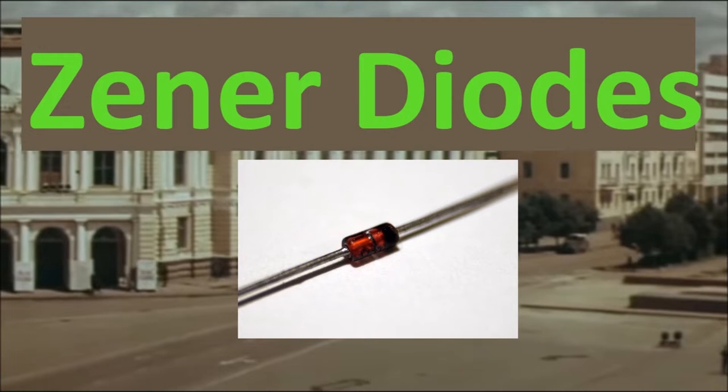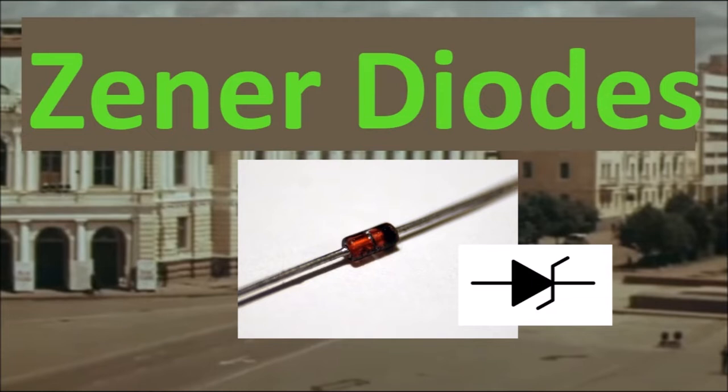A Zener diode is very similar to a conventional diode. A Zener diode has a PN junction. Both conventional and Zener diodes behave much the same when forward biased. However, what makes a Zener diode unique is its application when reverse biased. A Zener diode is designed to allow current to flow backwards when a specific reverse voltage is reached.